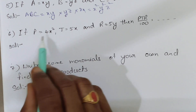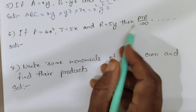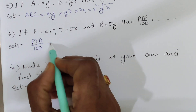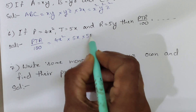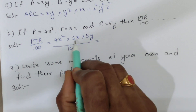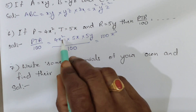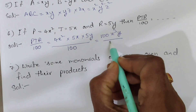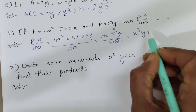Sixth question: if P equals 4x squared, T equals 5x, and R equals 5y, then find PTR divided by 100. PTR by 100 equals 4x squared into 5x into 5y, divided by 100. 4 fives are 20, 20 fives are 100. x squared into x gives x cubed. So 100x cubed y divided by 100 — the 100s cancel — giving x cubed y as the answer.